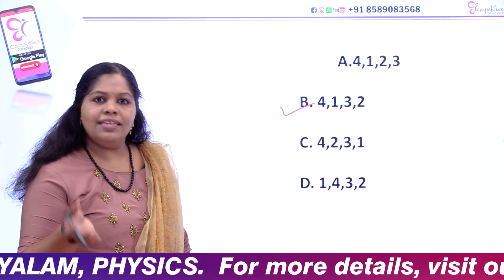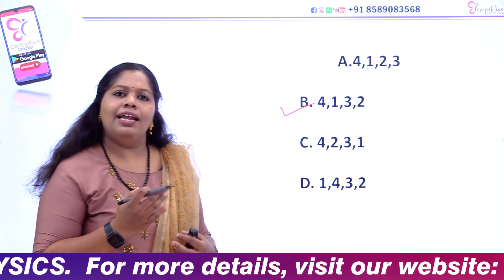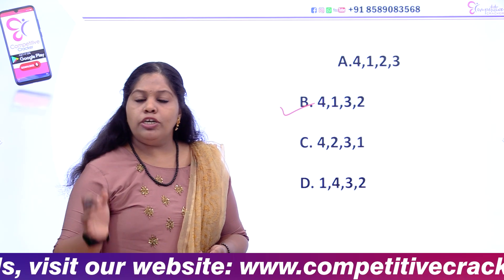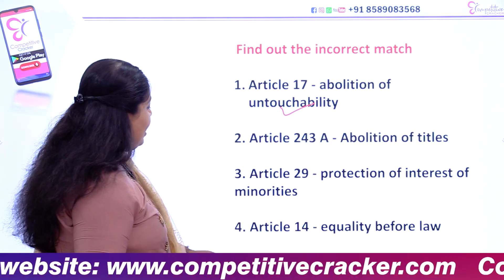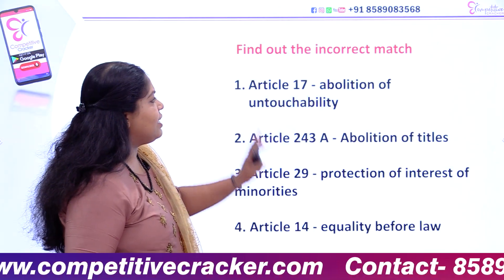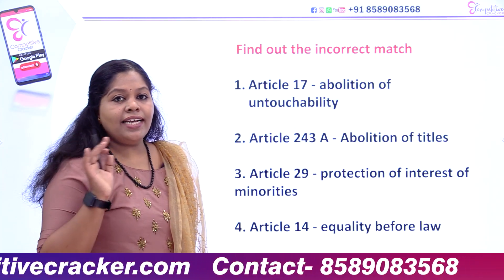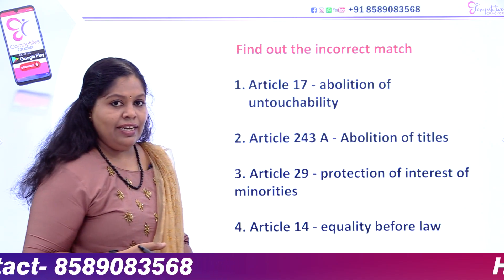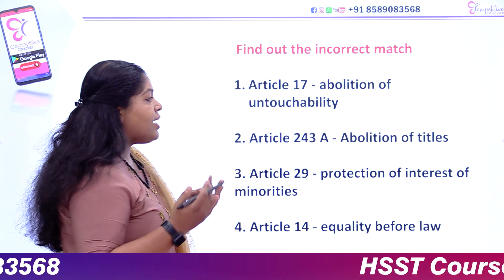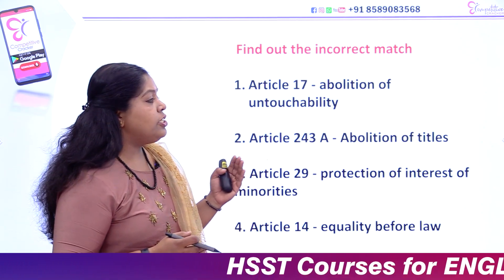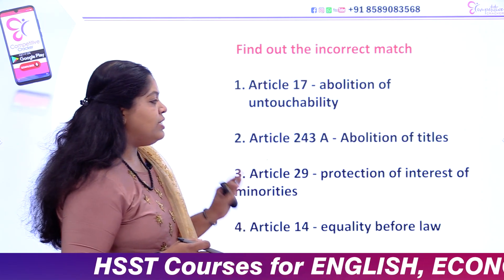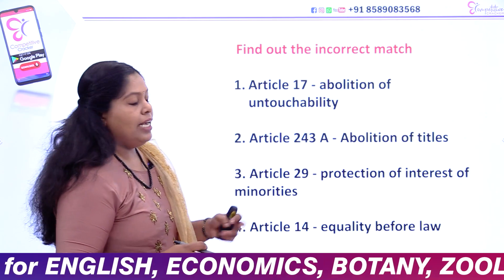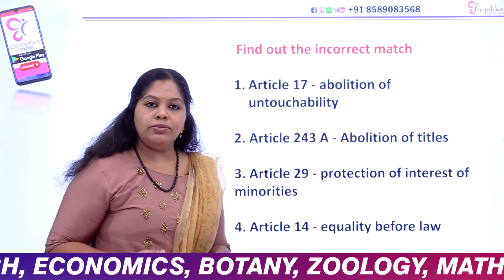Then we have to take a look at the next exam question. Find out the incorrect match. We have to look at the Constitution. Article 17: Abolition of Untouchability. Article 243A: Abolition of Titles. Article 29: Protection of Interest of Minorities. Article 40: Equality Before Law.